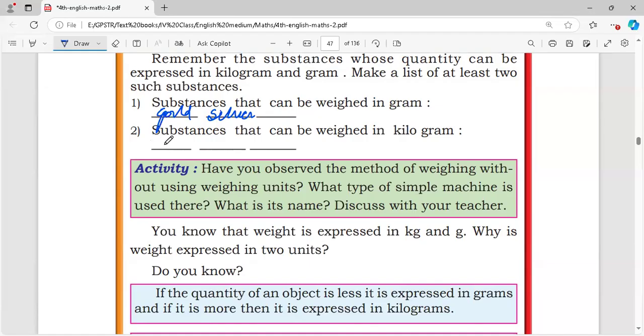Substances that can be weighed in kilograms include jowar, barley, wheat, and rice.